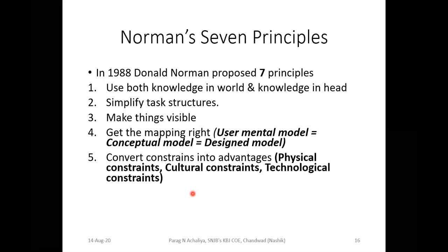Consider the example of a physical constraint: you are attending online lectures and you are at home, but you have a mobile charging problem — that is a physical constraint. A cultural constraint is when you are at some function or event and cannot attend the lecture. A technological constraint means you have a smartphone and internet, but your mobile does not support Zoom or lacks the required software for the online session.